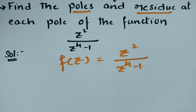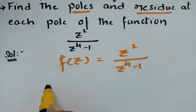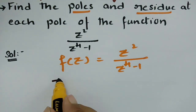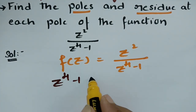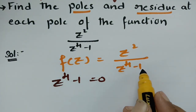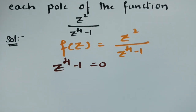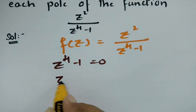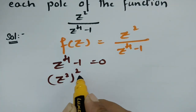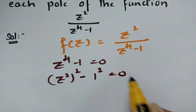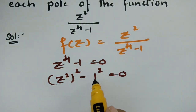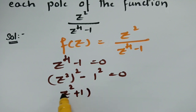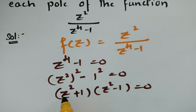First, we have to find the poles for the given function. To find the poles, we equate the denominator to 0: z⁴ - 1 = 0. This can be written as (z²)² - 1² = 0, which is of the form a² - b², so it factors as (z² + 1)(z² - 1) = 0.